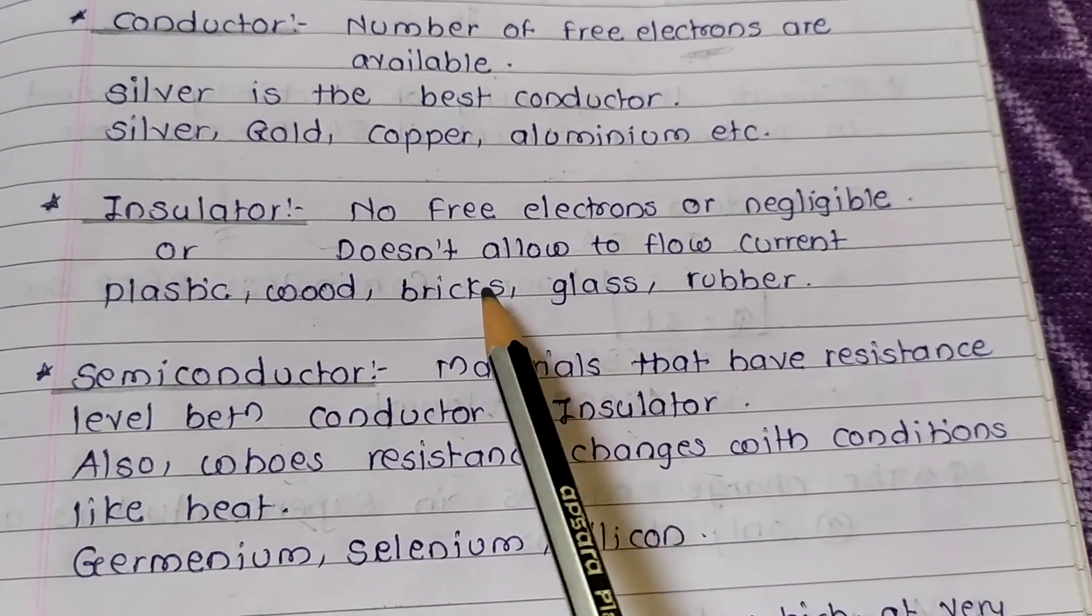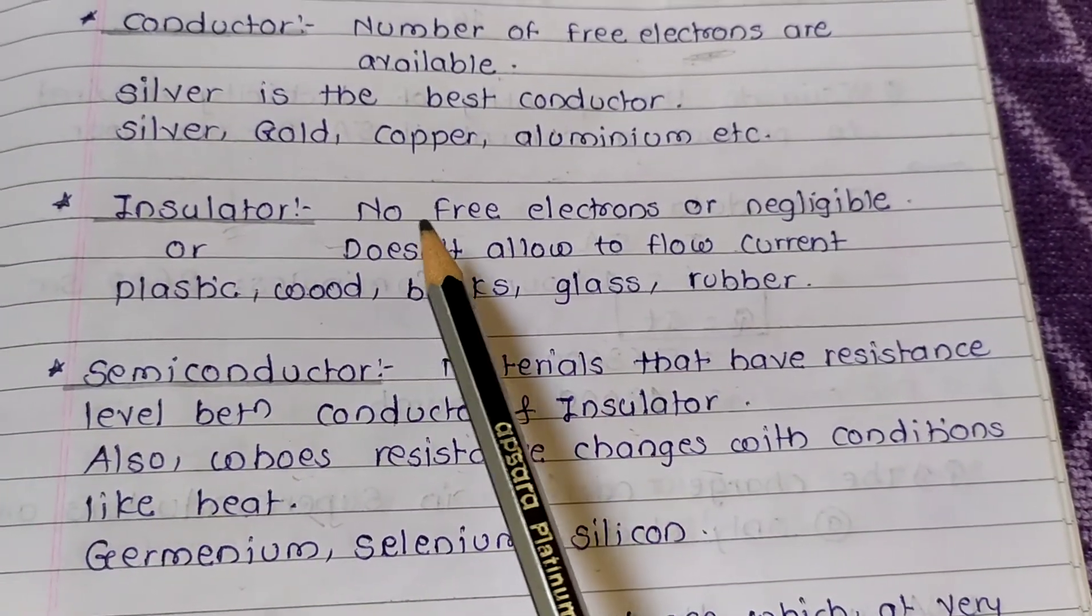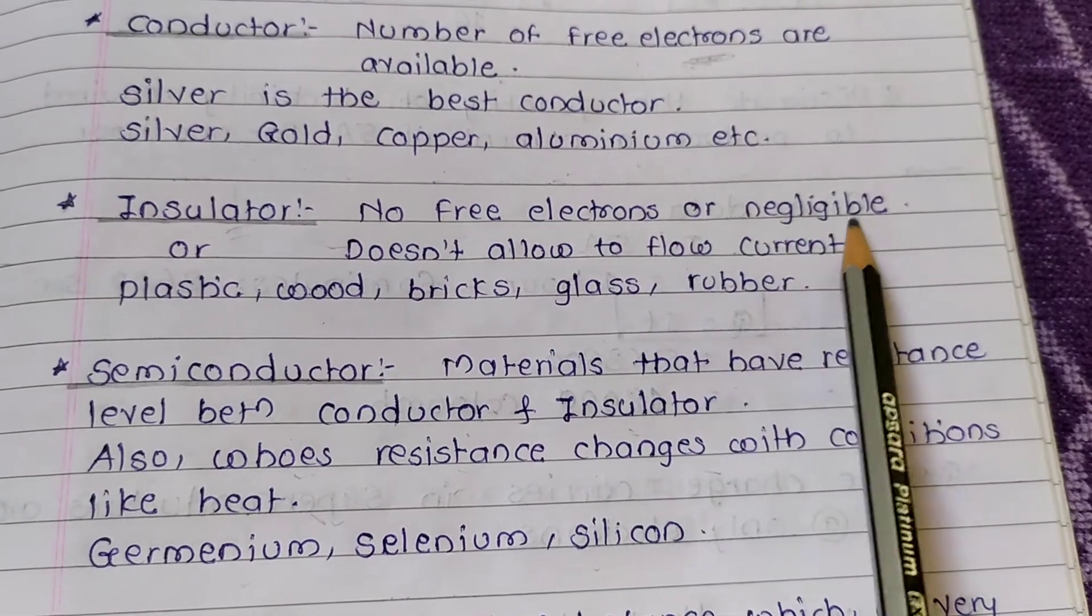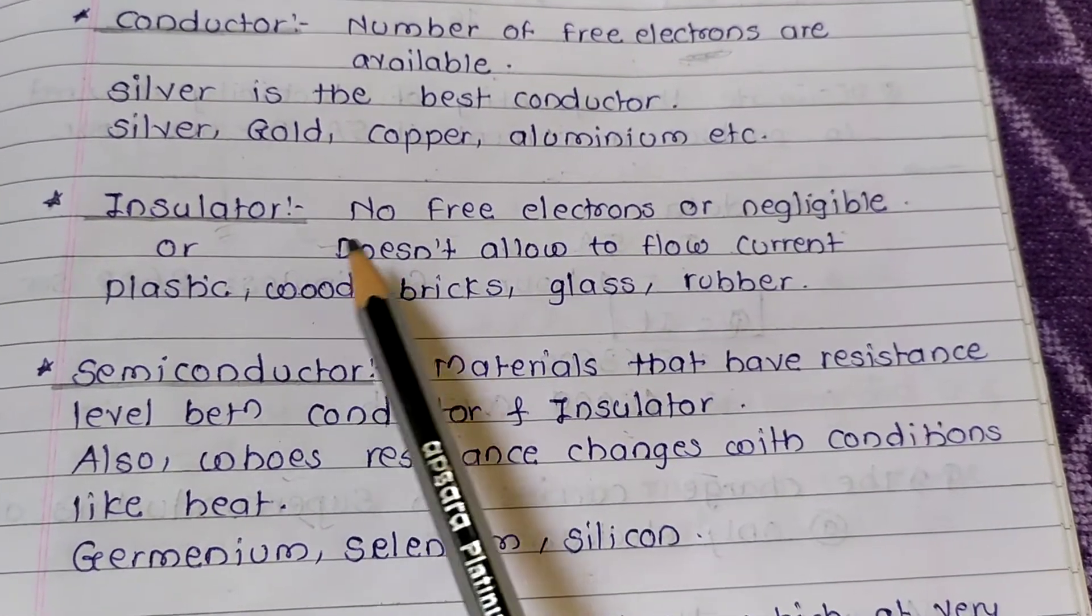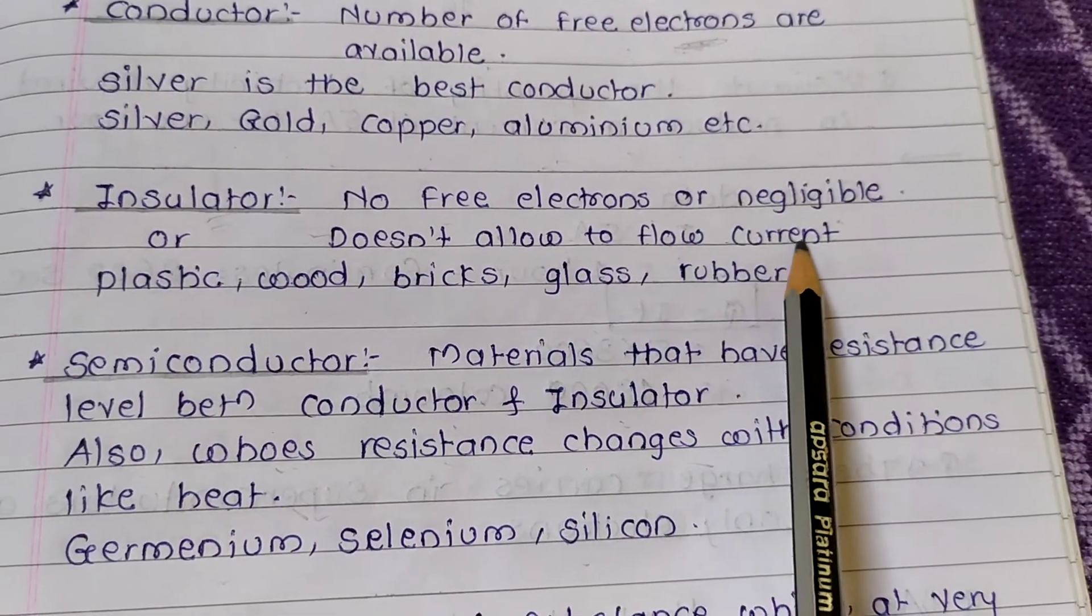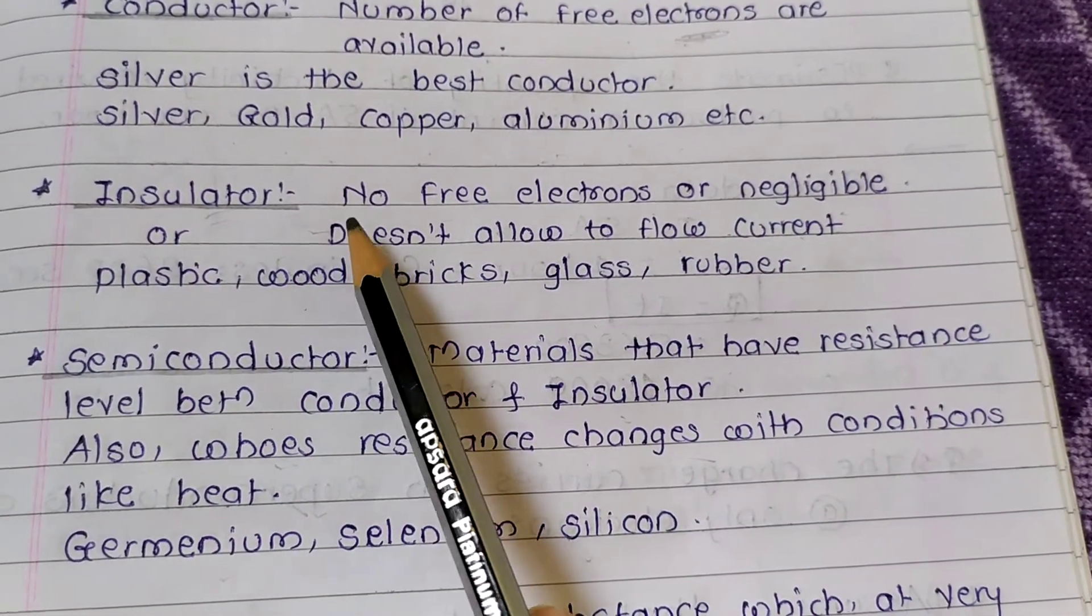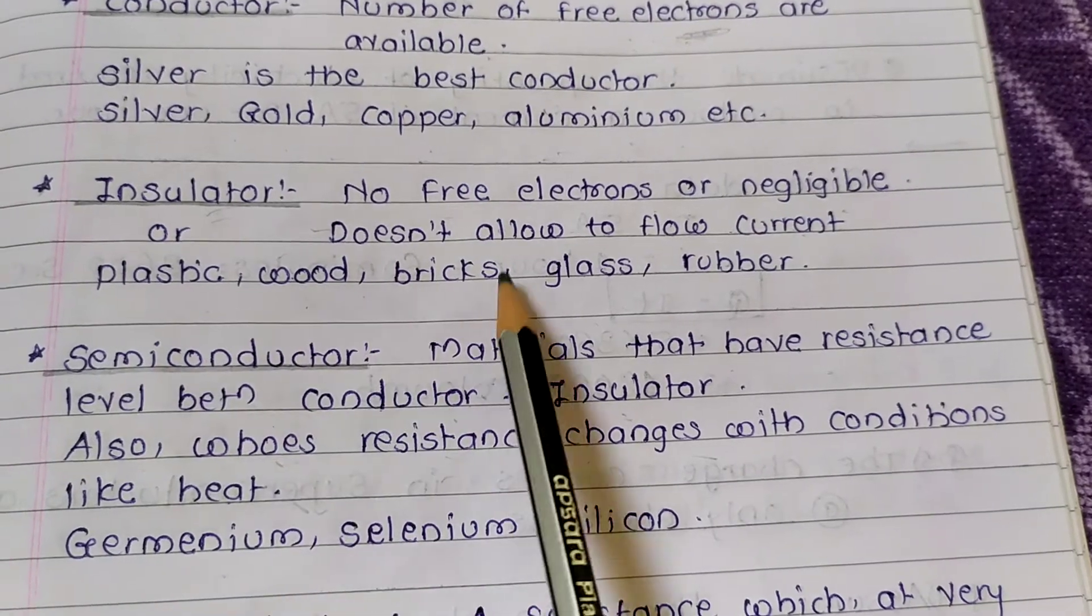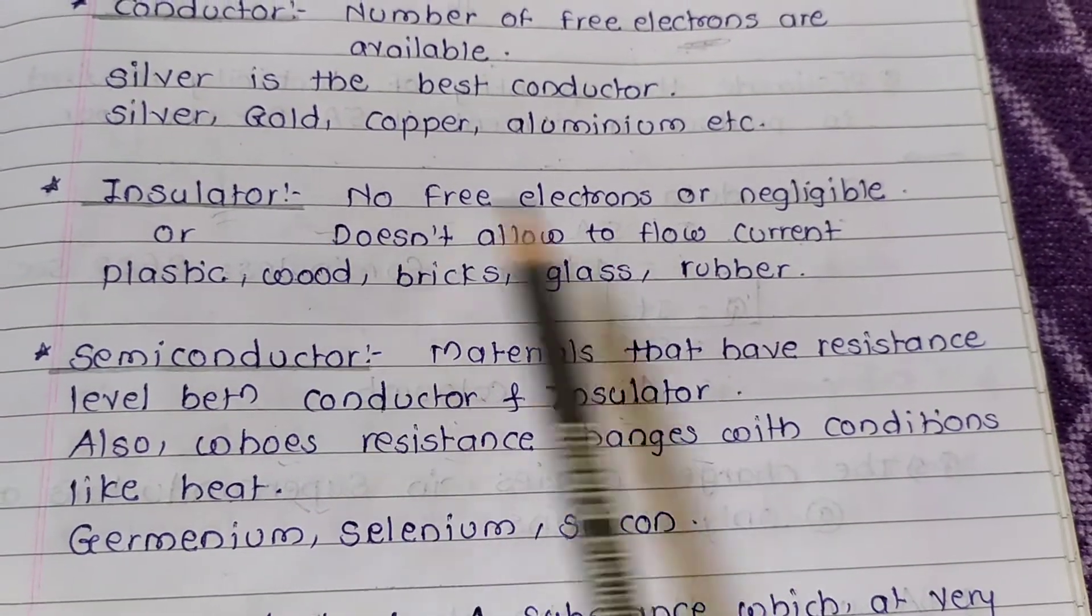Insulator means a material having no free electrons or negligible free electrons. Or doesn't allow to flow current. Plastic, wood, bricks, glass and rubber. These are insulators.